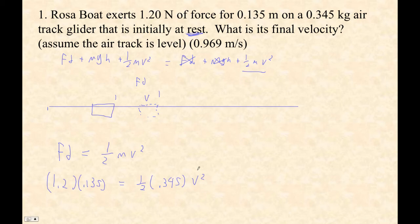But what I'm going to do is take this side here, 1.2 times 0.135, and then multiply by 2 divided by 0.345. And now I've got 0.939 equals V squared.